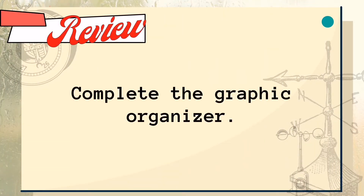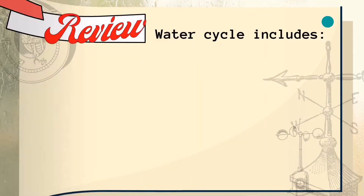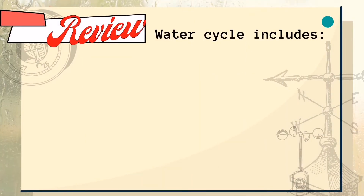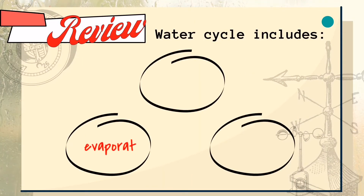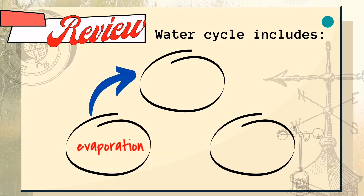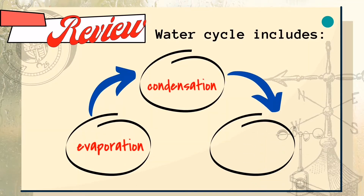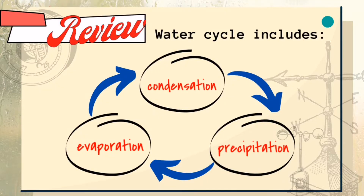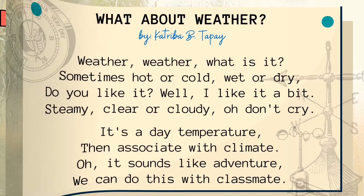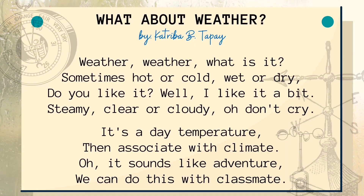Complete the graphic organizer. The water cycle includes evaporation, next is condensation, and precipitation.